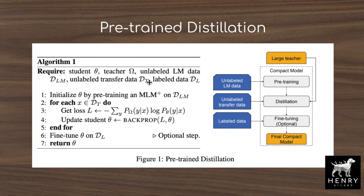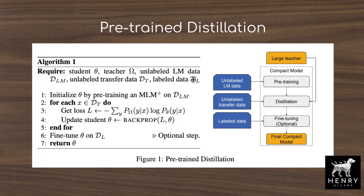This paper shows that instead of just using knowledge distillation from the larger open-source teacher model, it also helps to pre-train your smaller model with the masked language modeling task also used to pre-train the large open-source models. The algorithm first pre-trains the student model using masked language modeling and next sentence prediction on a language modeling dataset D_LM. D_LM and D_T are two different datasets: D_LM covers things like Wikipedia, Books Corpus, or Reddit text, whereas D_T is more curated to the downstream task.